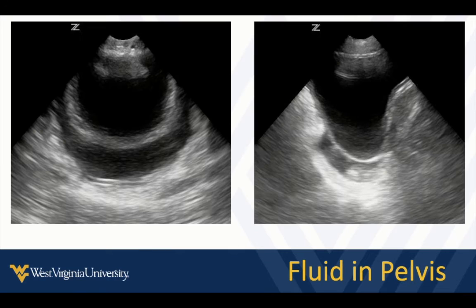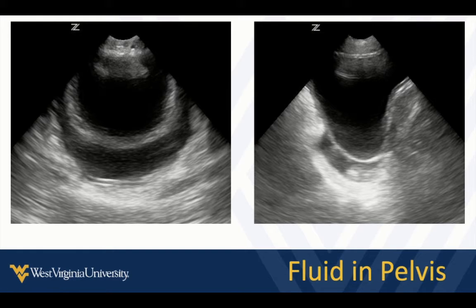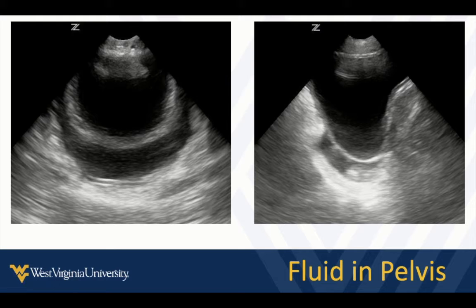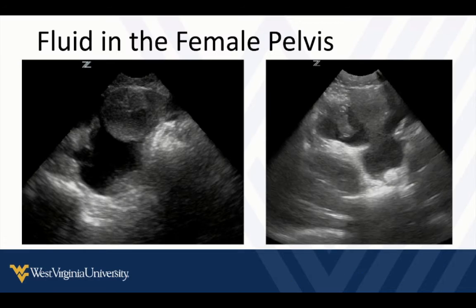If we come down to the pelvis in the male, we're going to see fluid back behind the bladder. Depending on how much fluid there is, it may wrap all the way up and over the top of the bladder, or if it's a smaller amount, it's just going to be behind. Notice it doesn't have that regular forking shape of the seminal vesicles. So that's free fluid there.